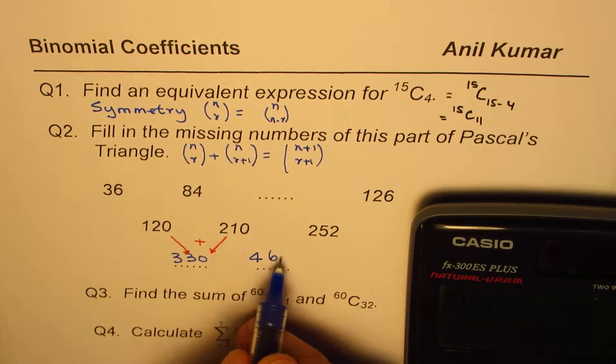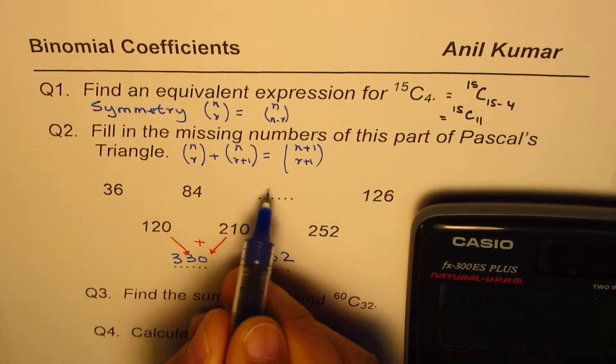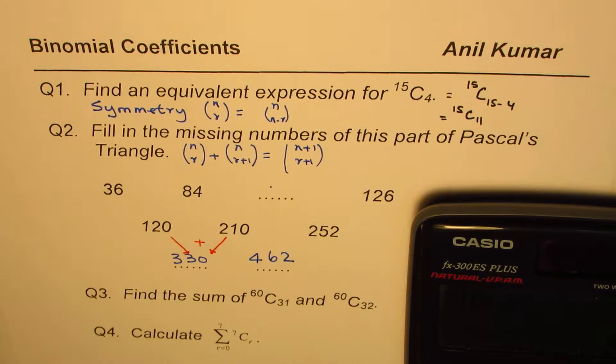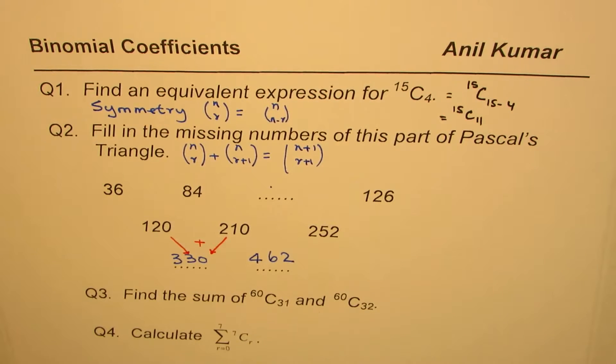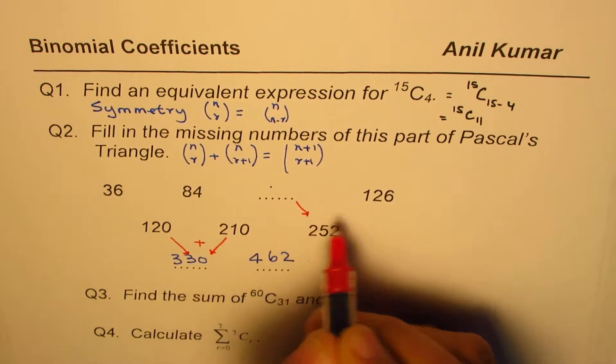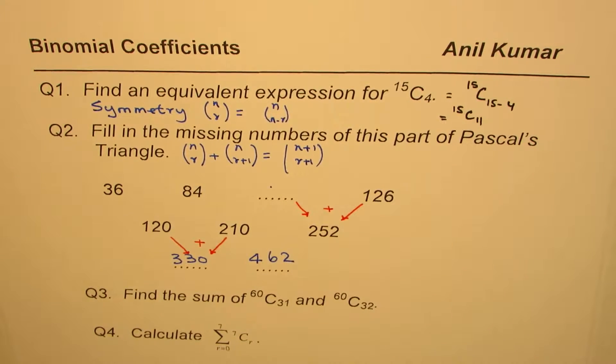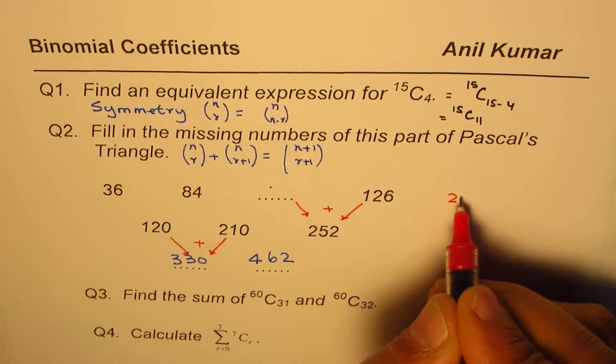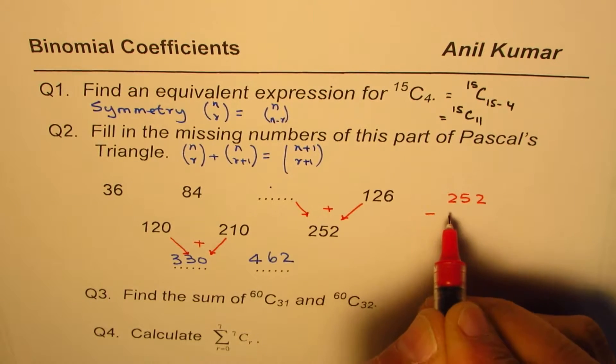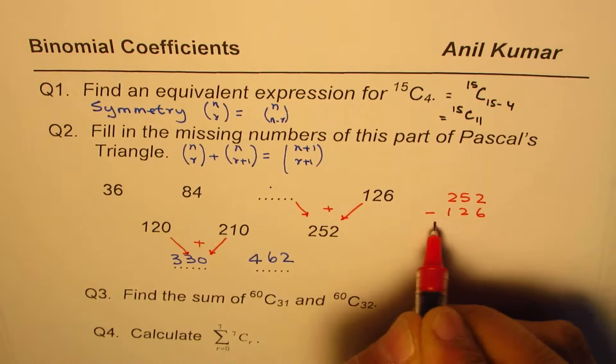Similarly we can get the next, which is 210 plus 252, and that equals 462. So we get 462. Now to get this one, we know that this number plus 126 will give us 252, and therefore that number should be 252 take away 126.